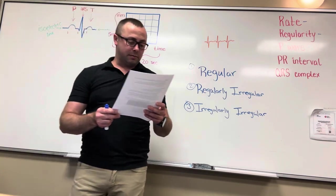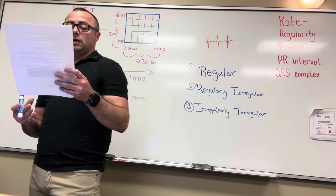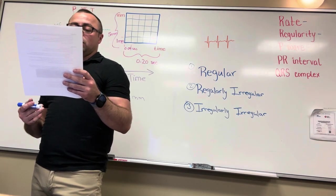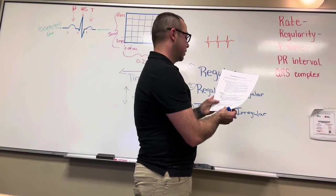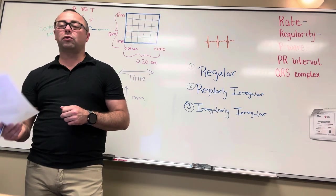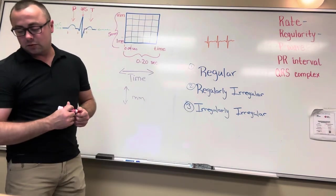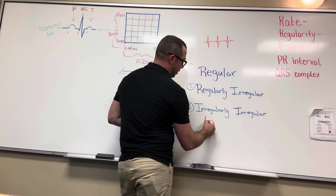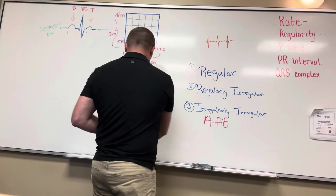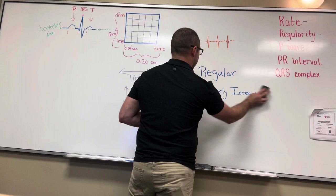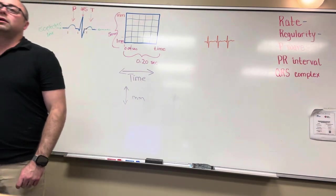Regular rhythms have the same space between all the R waves. Irregular rhythms have a varying space. Regularly irregular rhythms have a pattern to the irregularities. The most commonly encountered irregularly irregular rhythm — everybody's probably heard of it — is AFib, atrial fibrillation. The top part of the heart is just fibrillating, not pumping like it should. If you see something that is irregularly irregular, your rhythm is most likely going to be AFib.